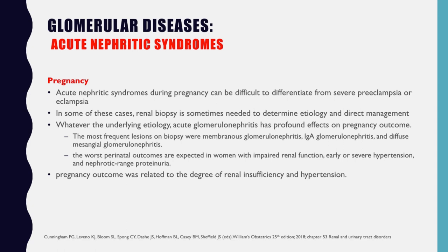Whatever the underlying etiology, acute glomerular nephritis has profound effects on pregnancy outcome. The most frequent lesions on biopsy were membranous glomerular nephritis, IgA glomerular nephritis, and diffuse mesangial glomerular nephritis. The worst perinatal outcomes are expected in women with impaired renal function, early or severe hypertension, and nephrotic-range proteinuria. Pregnancy outcome is related to the degree of renal insufficiency and hypertension.